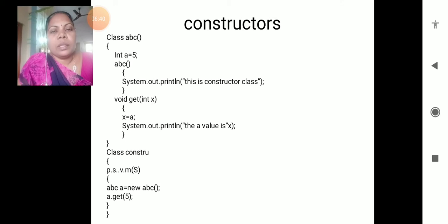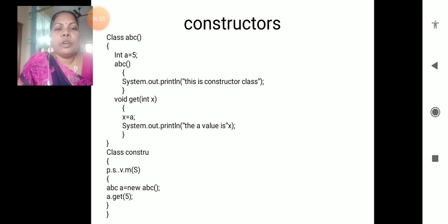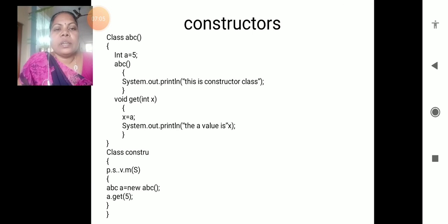But void get - we are preparing the method. This method: a.get(5) - we are preparing the parameterized method. That's why we are sending the value for x. a is the object name and get is the method name - we are passing the parameter value, that is int x. So this is the constructor creation.